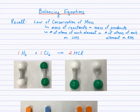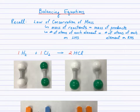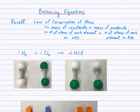Balancing equations is a very important skill in chemistry — in the language of chemistry — to allow you to communicate the reactants and products involved in a chemical reaction. It will be crucial to balance equations successfully in order to do stoichiometric calculations later. You may recall the law of conservation of mass: the mass of reactants equals the mass of products. Mass is conserved; it is neither created nor destroyed in a chemical reaction.